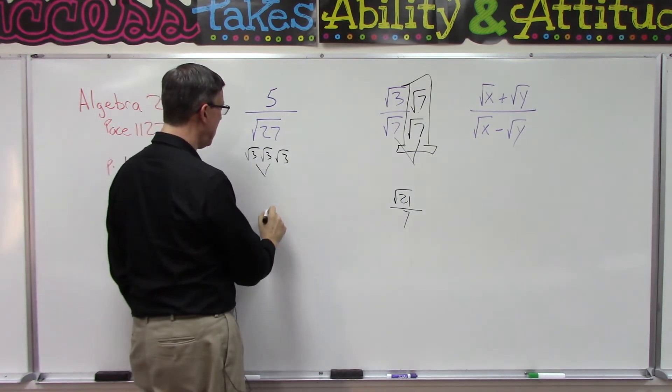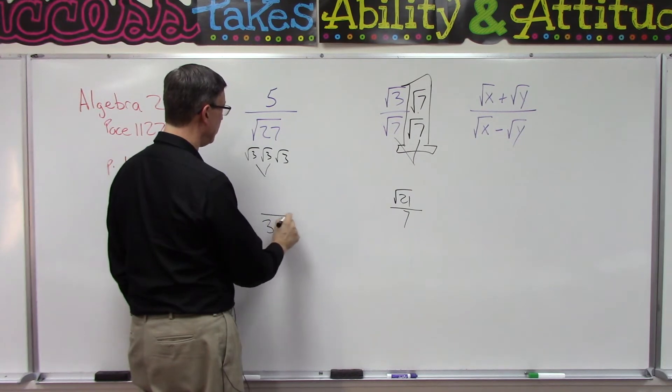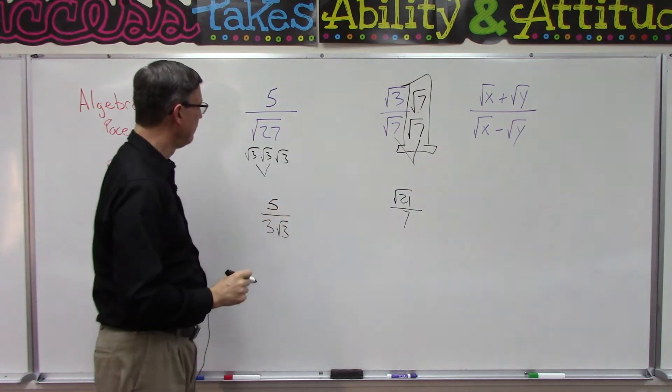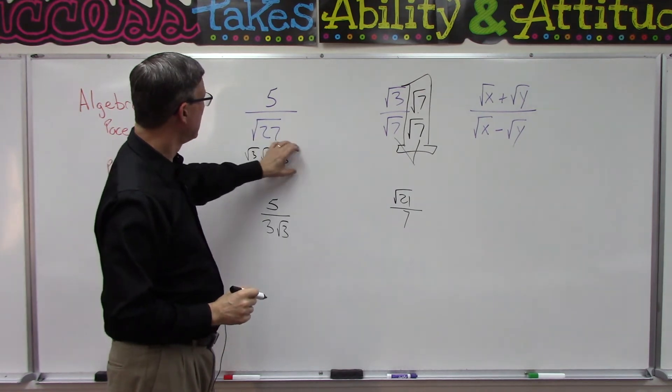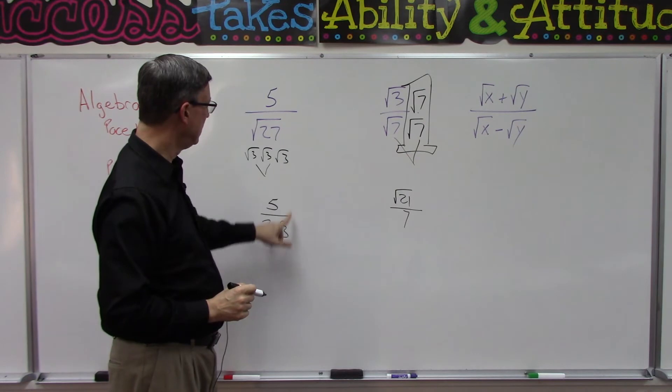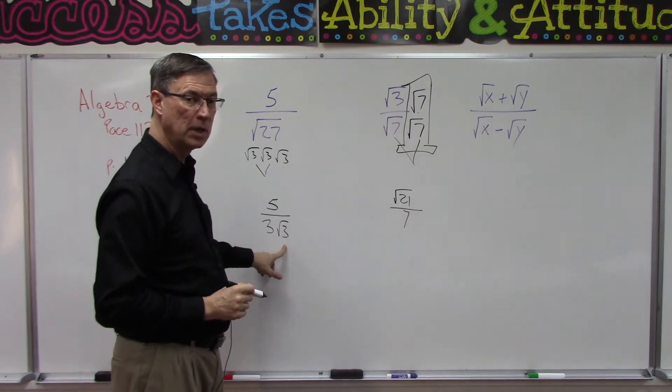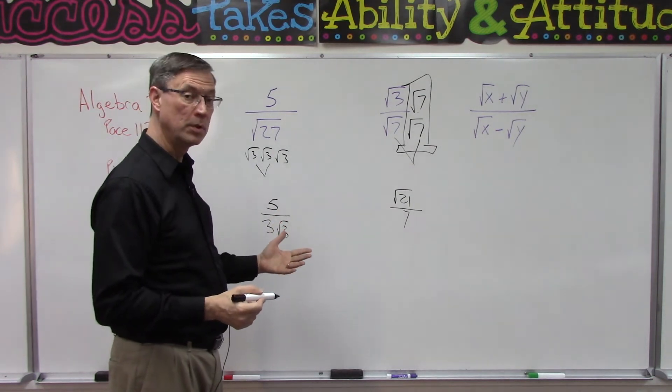You see that, and then we're left with square root of three. On the top we have five, so we leave the five down here. I simplified it by getting the three out, leaving the square root of three.